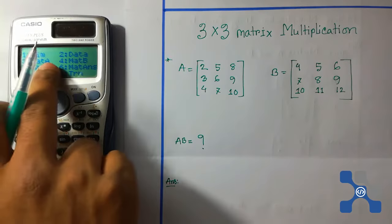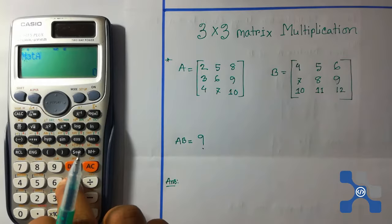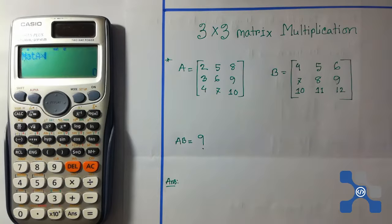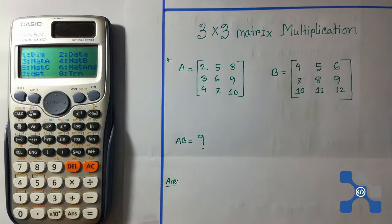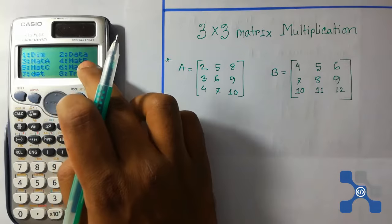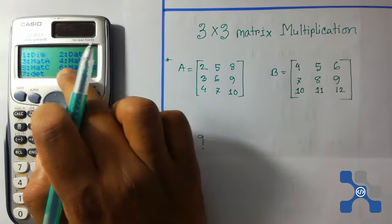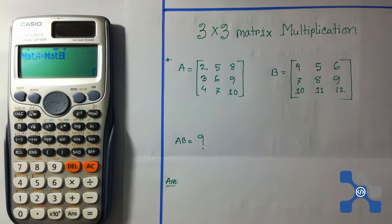Press multiplication button and again press shift 4. Our B matrix is loaded on mat B. Here is 4 for mat B, press 4. And now press equation then press equal button.